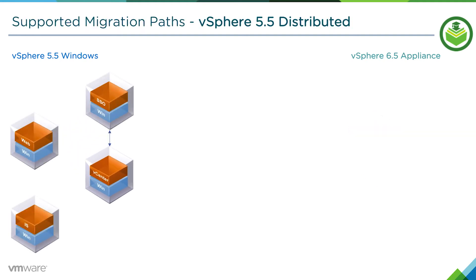Looking at the vCenter 5.5 distributed setup — in vSphere 5.5, we could have the SSO, vCenter, inventory service, and web client all on their own unique machines. In this worst-case scenario, we have the web client, inventory, SSO, and vCenter all on separate machines. We don't actually need to worry about the web client machine or the inventory service machine — we only need to focus on the SSO machine and the vCenter Server machine.